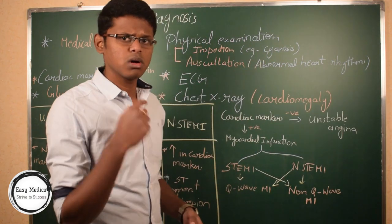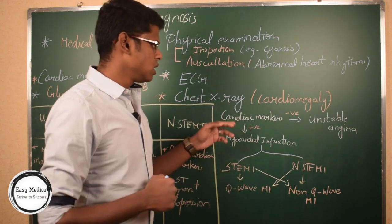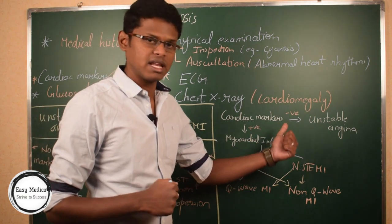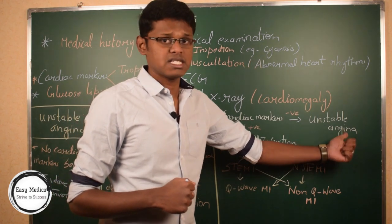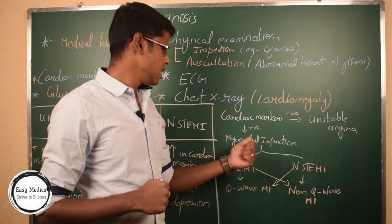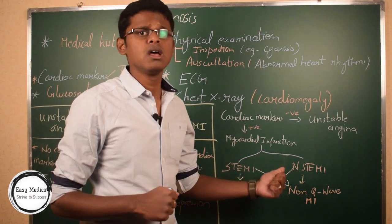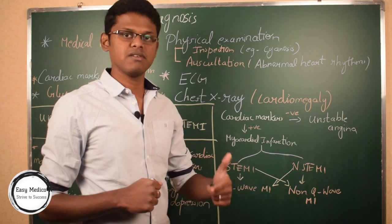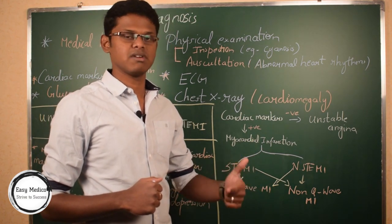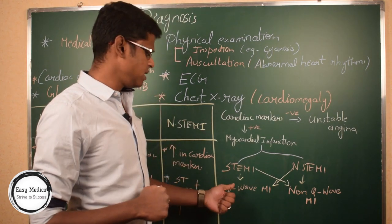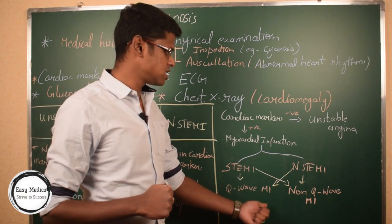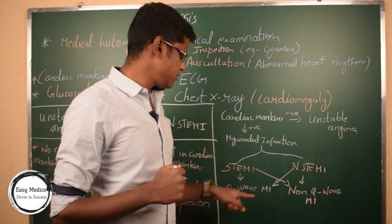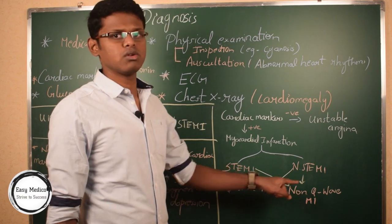To make the differentiation clearer, here is a mind map. Cardiac markers are the main diagnostic tool. When cardiac markers are negative or not elevated, the patient may have unstable angina. If cardiac markers are positive or elevated, the patient has myocardial infarction, which is further classified into STEMI and non-STEMI. STEMI can also be characterized by Q-wave myocardial infarction on ECG, and non-STEMI with non-Q-wave myocardial infarction, though this can also be vice versa.